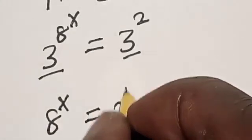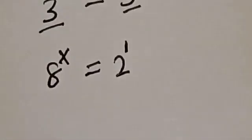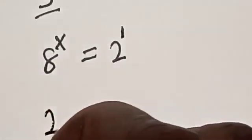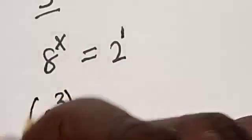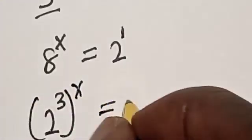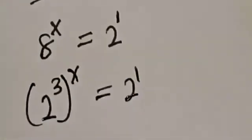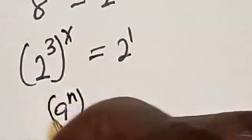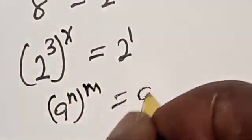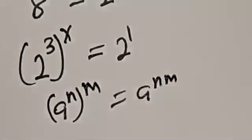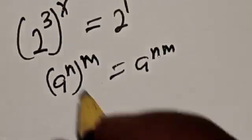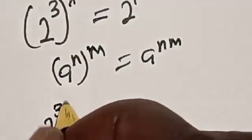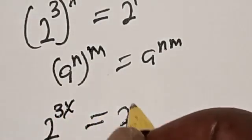8 raised to power x is equal to 2, which is the same as 2 raised to power 1. Then 8 raised to power x can be written as 2 raised to power 3, so 2 raised to power 3 raised to power x is equal to 2 raised to power 1. Remember this rule: a raised to power n raised to power m is equal to a raised to power n times m.